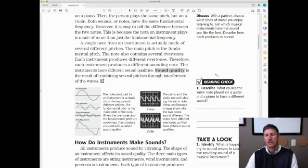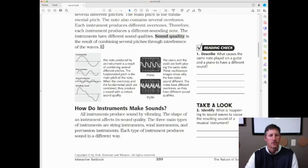Taking a look at your reading check here, what causes the same note played on a guitar and a piano to have a different sound? How do instruments make sounds? All instruments produce sounds by vibrating. They vibrate the note. They vibrate the space around them. Remember that vibration is waves. The shape of an instrument affects its sound quality. The three main types of instruments are string instruments, wind instruments, and percussion instruments. Each type of instrument produces a different sound.